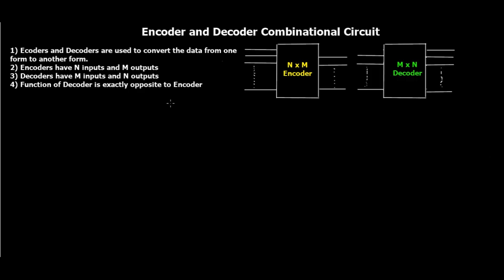Encoder and decoder are used to convert data from one form to another form. They are combinational circuits — digital circuits — used to convert one format of data to another format. The conversion can be binary to BCD, BCD to a seven-segment display, binary to ASCII, and so on. Whenever there is a conversion of the format of data, encoder and decoder play an important role.